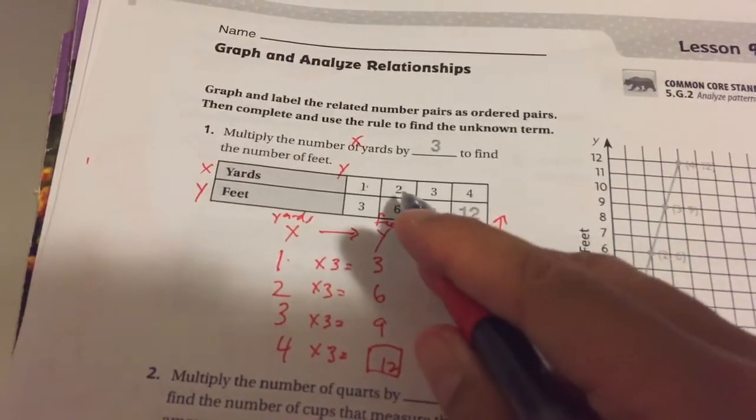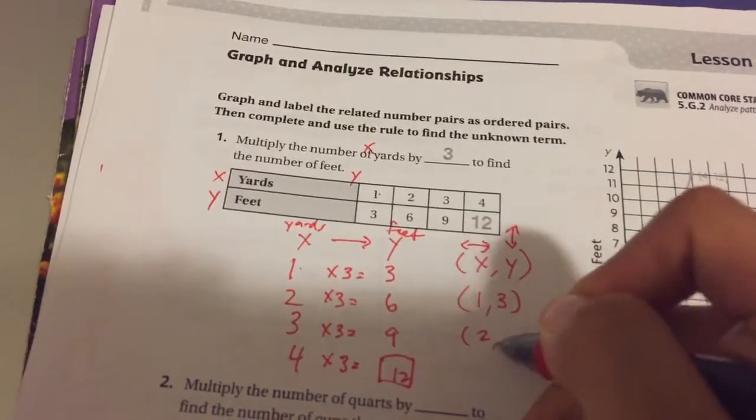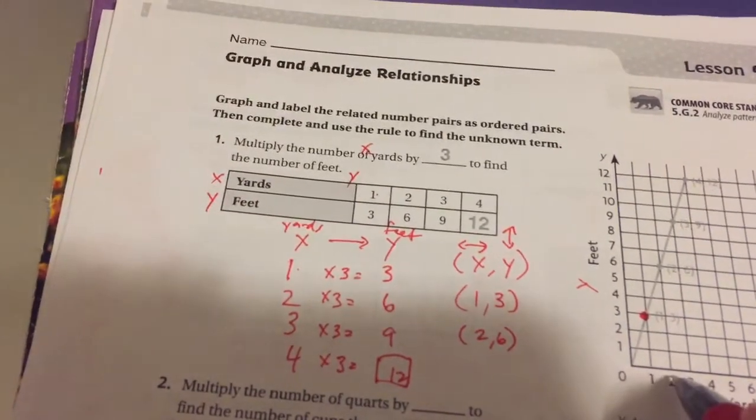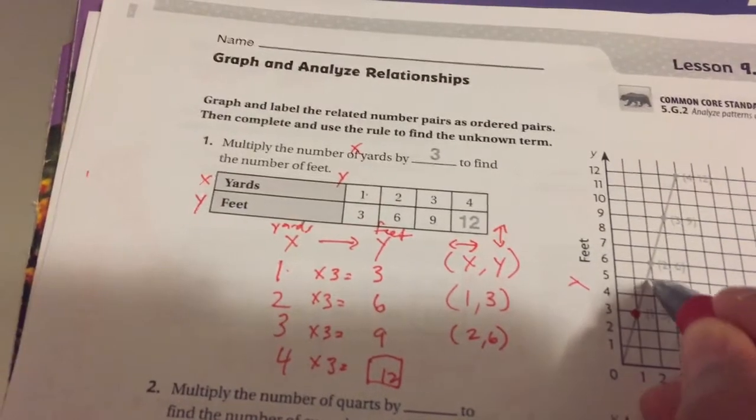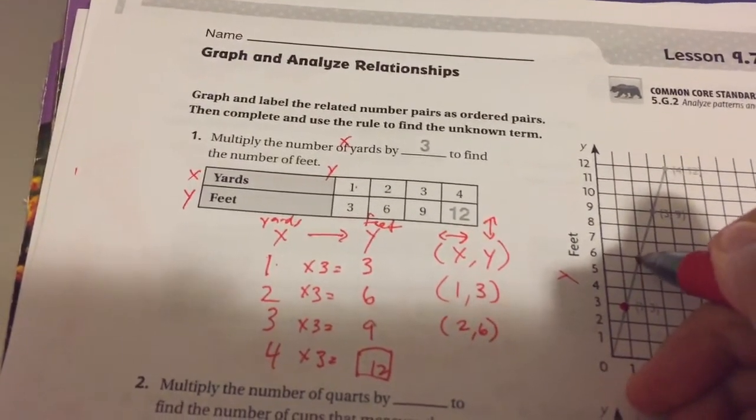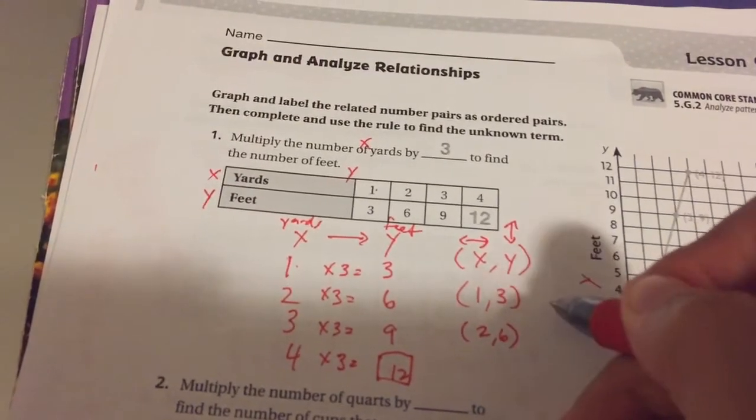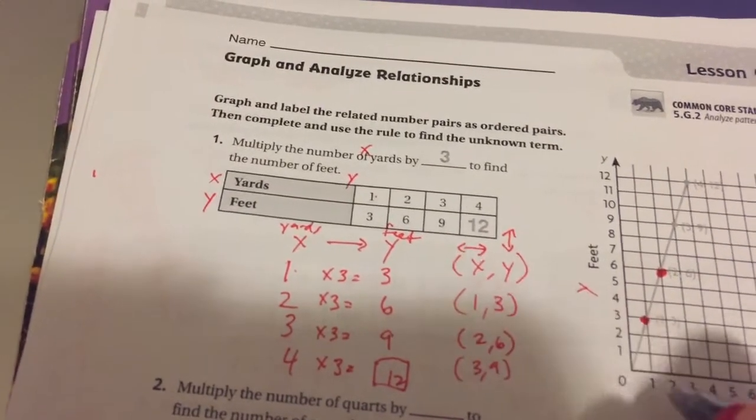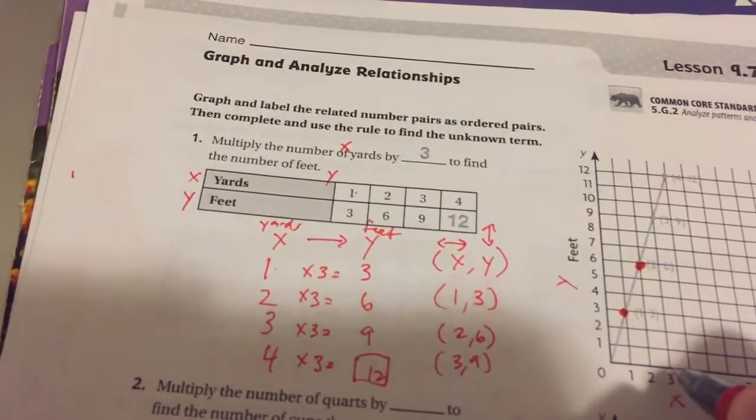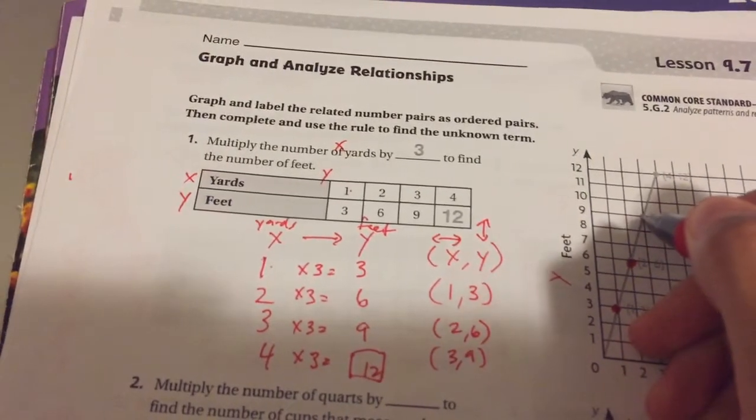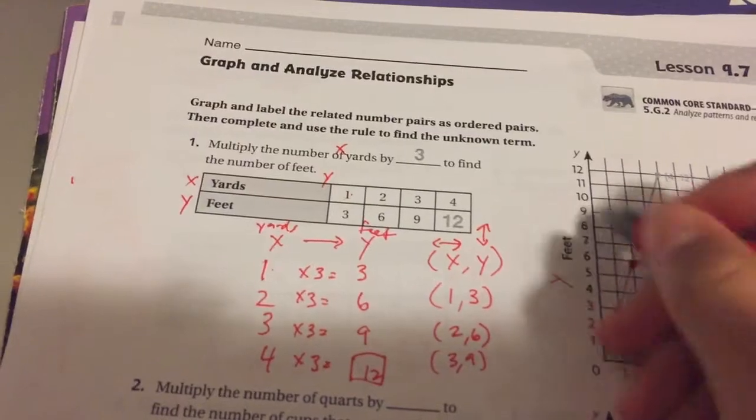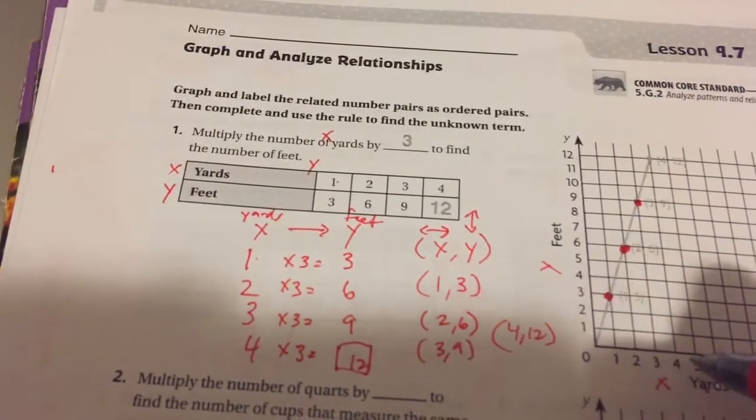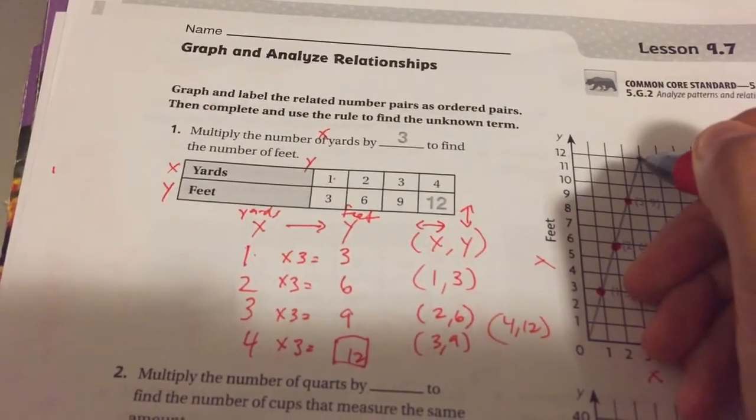Our next one is X is our 2, Y is our 6. 2-6. X tells us to go right 2 times, so right 2 times, and the Y, the 6, tells us to go up 6 times. So that's 2-6. Our next one is 3-9. And our X tells us to go left and right, so we're going to go right 3 times, and the 9 tells us to go up 9 times because that's our Y, it goes up and down. And our last one is 4, 12. We're going right 4 times and up 12 times.